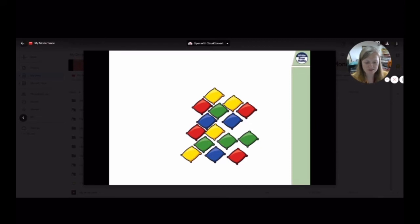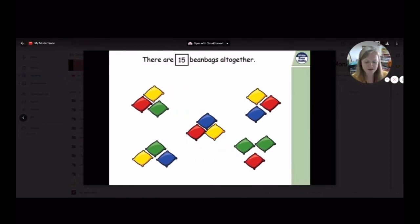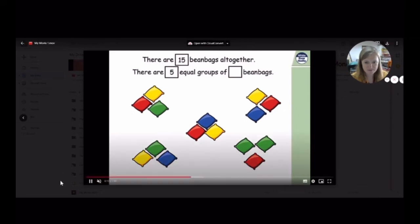Sometimes we won't make rows and columns, like these bean bags. I have 15 bean bags altogether and I'm going to group them in threes just by sliding them along. Here goes my first group of three, another group of three, and another, and another, and I'm left with a final group of three in the middle. I have five equal groups of three bean bags.